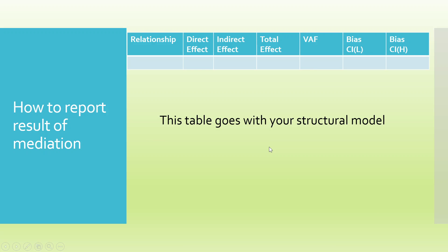Now, how to report the result of mediation in your paper: you will have to specify the relationship, the direct effect, the indirect effect, the total effect, VAF, the bias-corrected confidence interval with the lower and upper bounds.